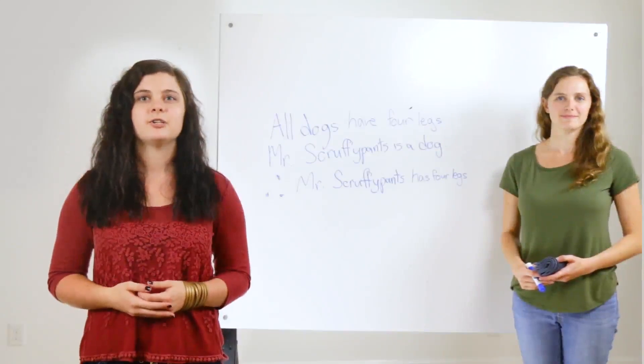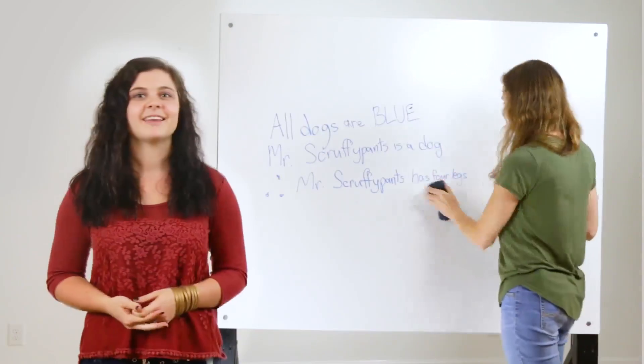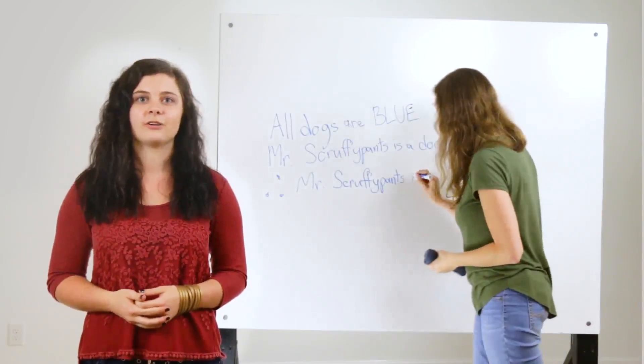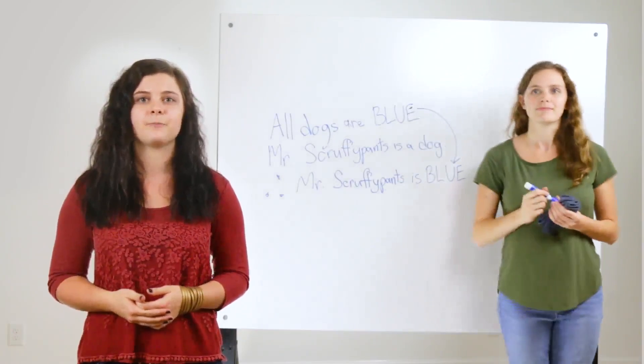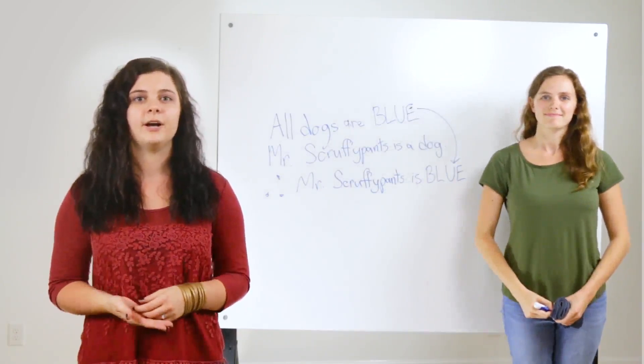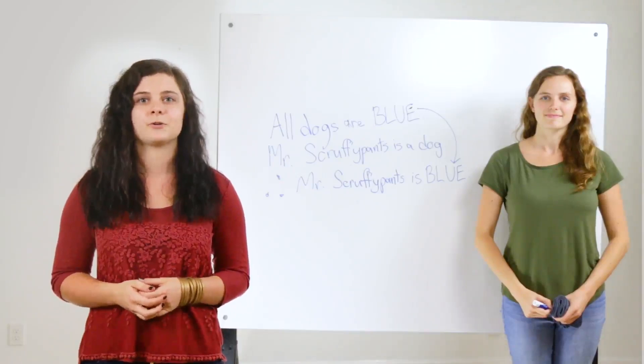First, a syllogism can contain untrue statements. If we said that all dogs are blue and that Mr. Scruffypants is a dog, the structure of the syllogism would tell us that Mr. Scruffypants is blue. The syllogism is logically valid, but because it contains an untrue premise, its conclusion is also untrue, and the syllogism is unsound.